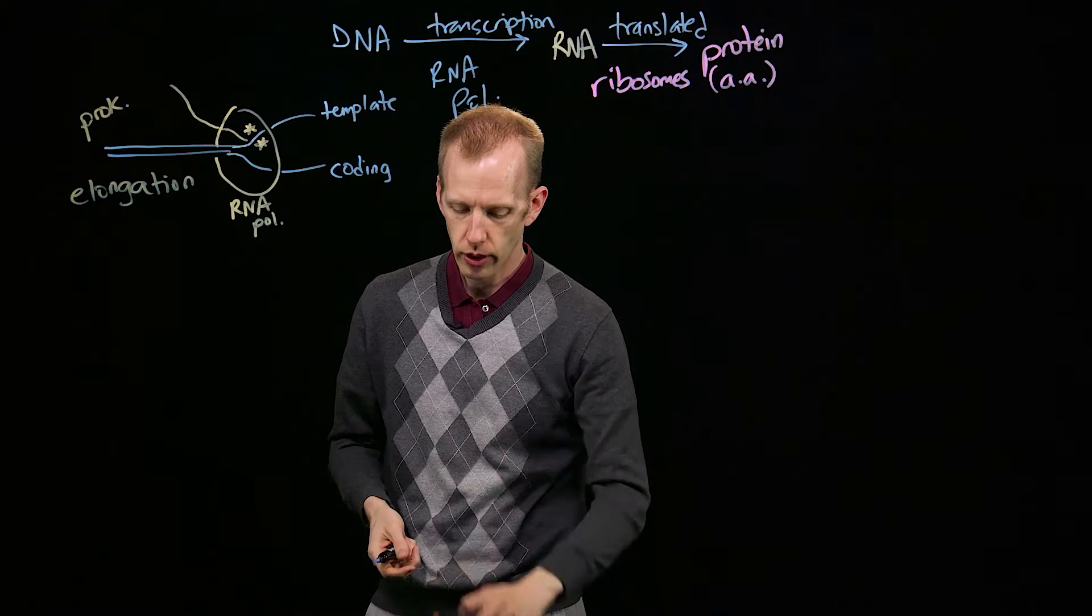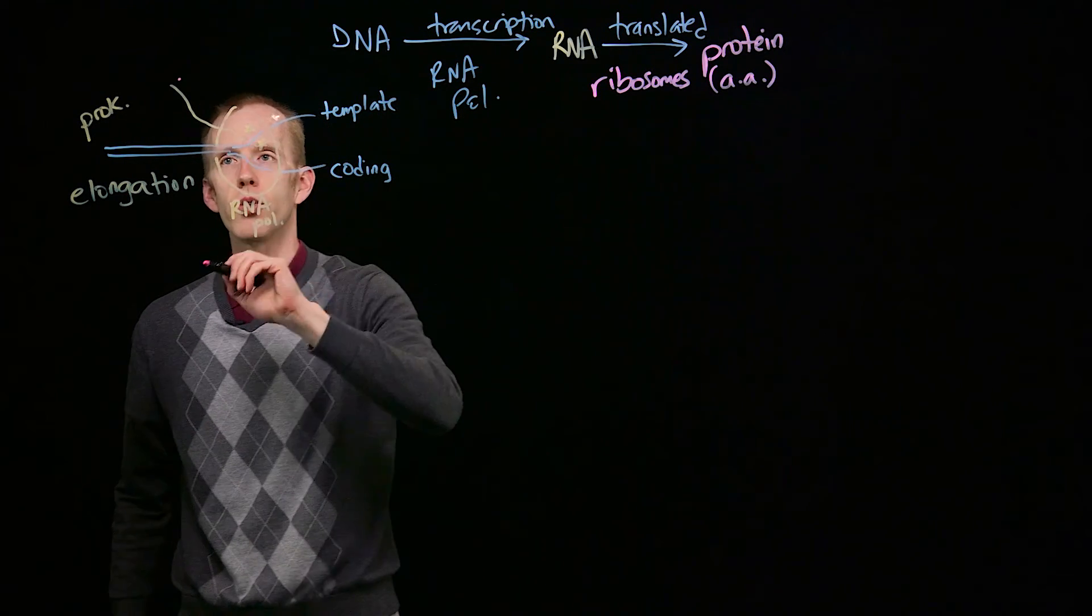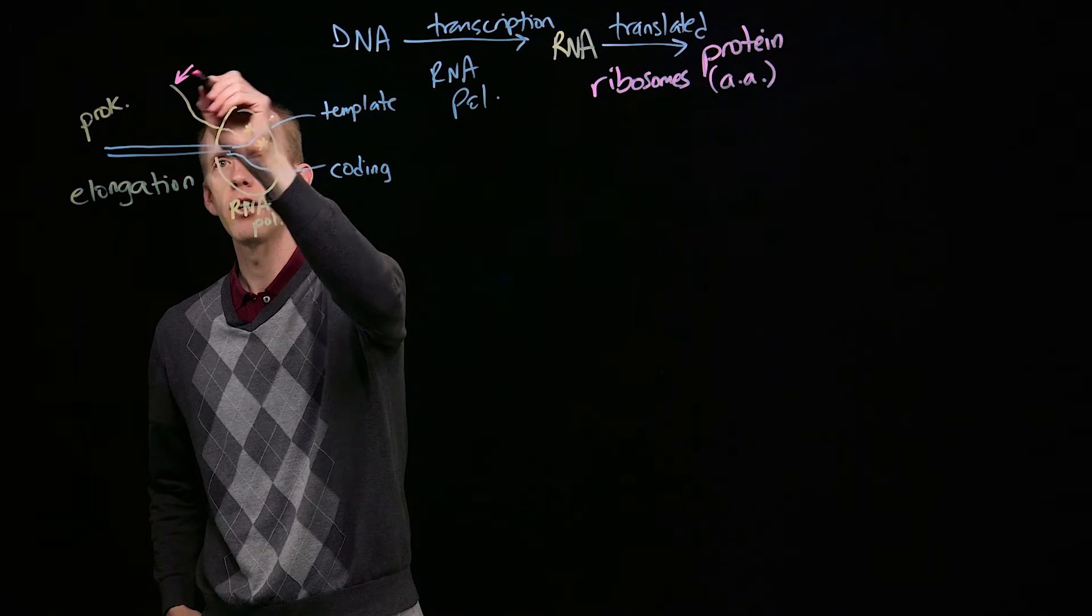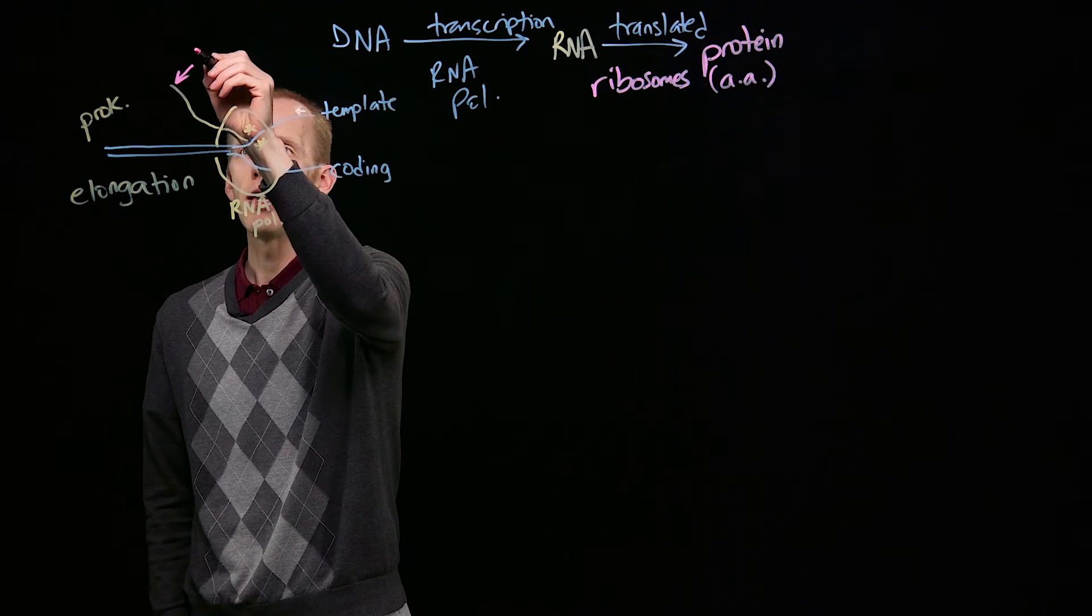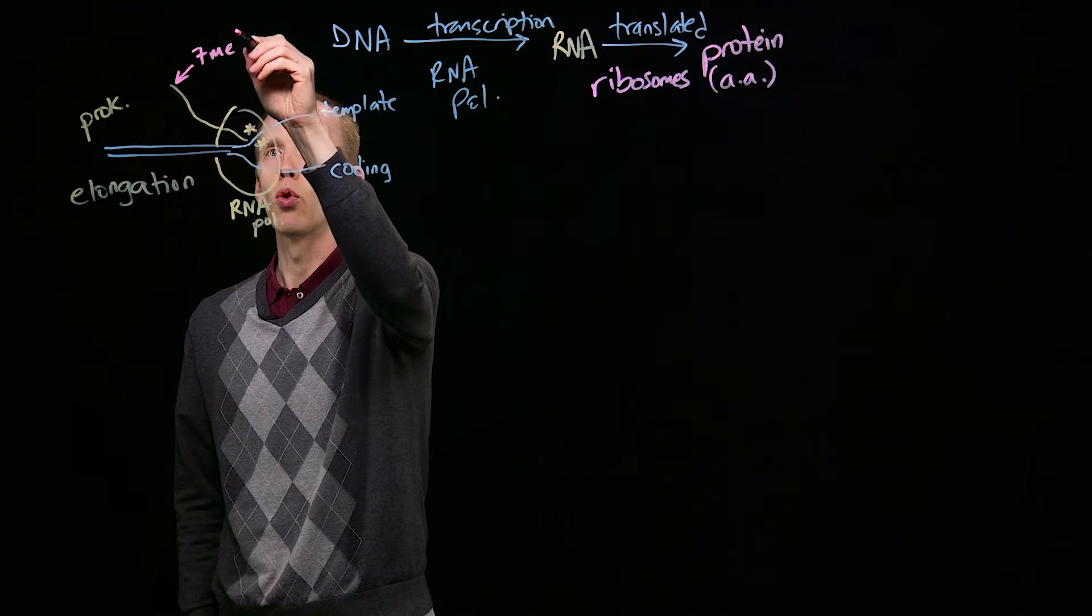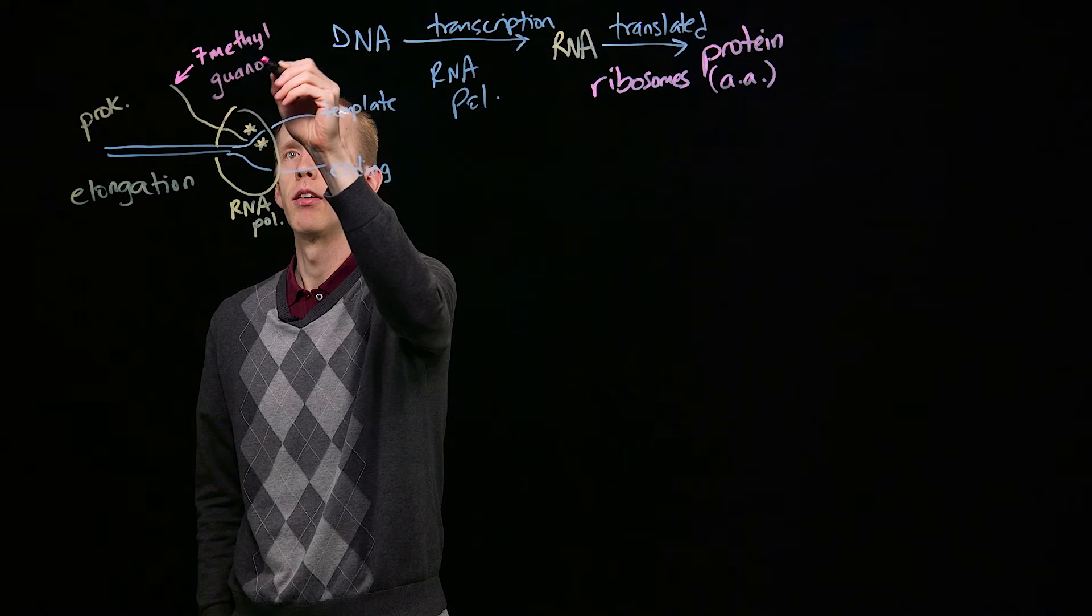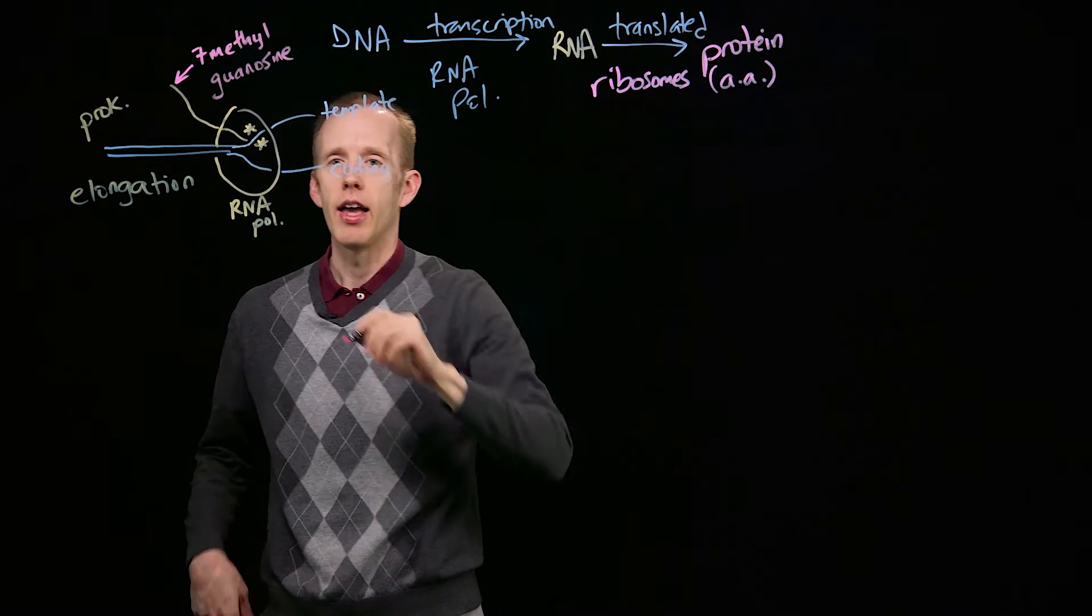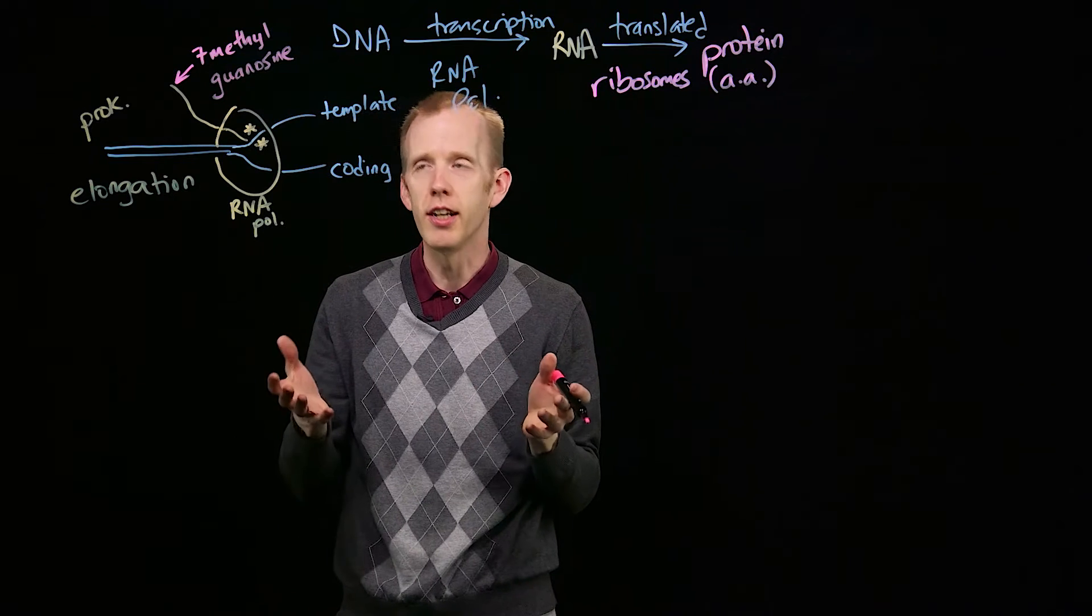One thing that's different about eukaryotes is that as soon as this end of the transcript comes out of RNA polymerase, it gets a 7-methylguanosine cap added. 7-methylguanosine is a special type of nucleotide, essentially a G.